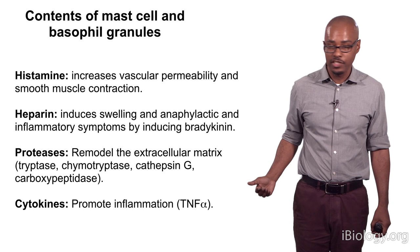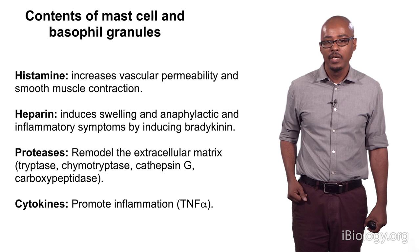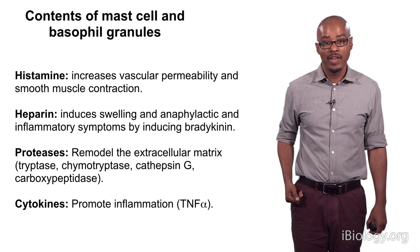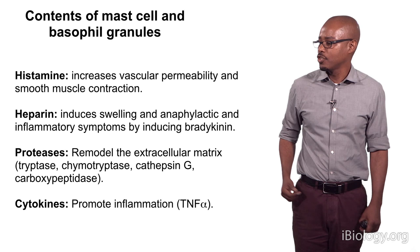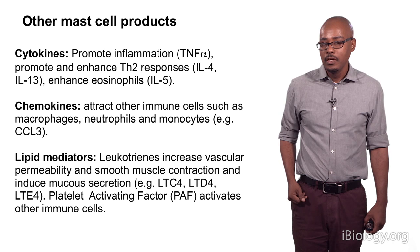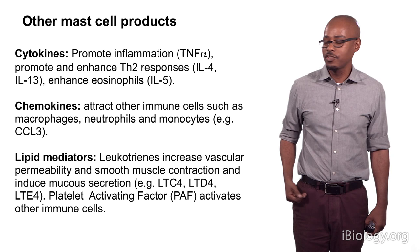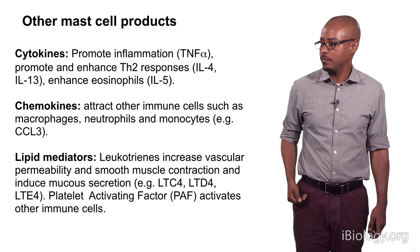The contents of these granules include histamine, heparin, proteases, and cytokines. These pharmacological agents have different physiological effects. For example, histamine increases vascular permeability and smooth muscle contraction, whereas heparin induces swelling, anaphylactic, and inflammatory symptoms, and proteases can remodel the extracellular matrix and cause changes in cell migration. Mast cells can also produce cytokines that further promote inflammation, as well as chemokines that attract other immune cells to the site of activation, and lipid mediators that can affect smooth muscle cells and induce mucus secretion.